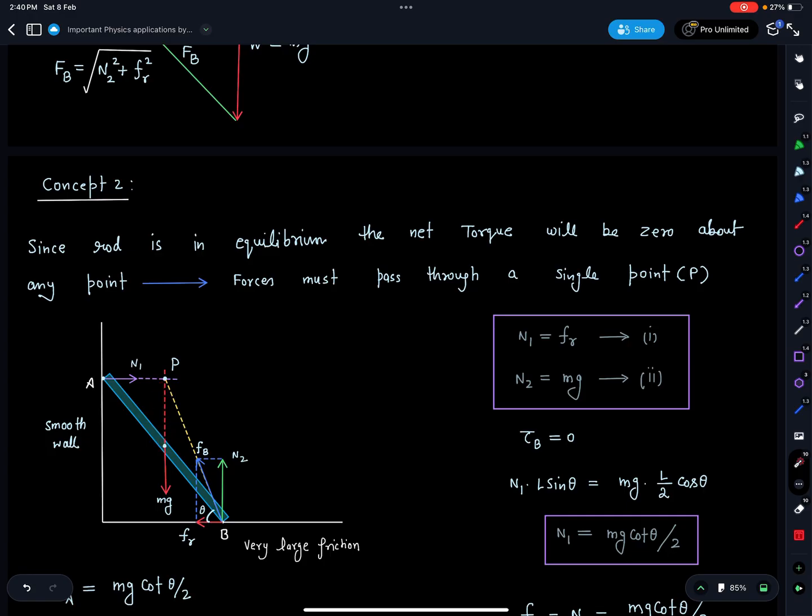JEE's students normally will know MN cot theorem. So here the forces must pass through a single point. Line of action of N1 is fixed, it is going to be perpendicular to this wall. Line of action of mg is also fixed. So if these two forces are passing through this point for the equilibrium of rod, N2 and FR will adjust itself in such a way that it must pass through this point B. Because we can write torque about any point, at the same time there must be a unique point so that we can say net torque is zero about this. So all three forces are passing through one single point.